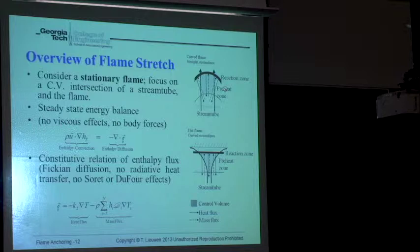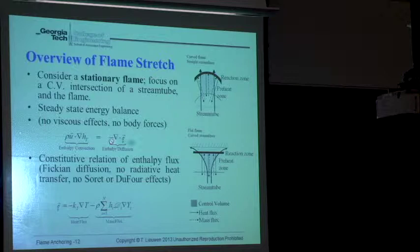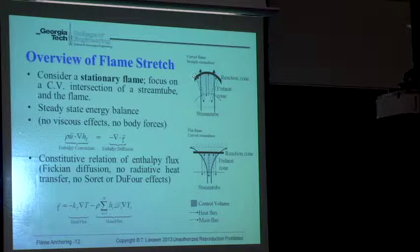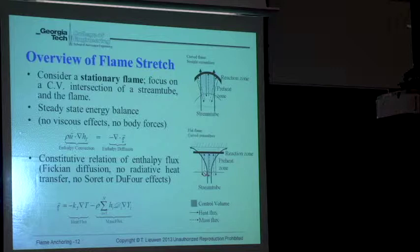Consider a stationary flame. Focus on a control volume which is the intersection of a stream tube and the flame. We have an energy equation with a convective enthalpy term and an enthalpy diffusion term, which consists of a heat flux term and a mass flux term. Because heat diffuses normal to isotherms, you'll have thermal energy flowing into the side of this control volume if you have a curved flame. For this configuration you have heat flowing out of the control volume. For diverging flow, heat comes into the control volume, and then you also have mass diffusing normal to iso-concentration lines, leading to chemical energy or enthalpy diffusing in or out.